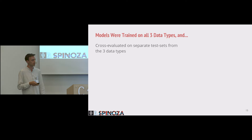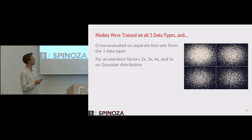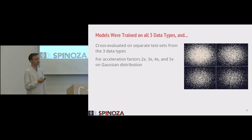During training, we generate subsampling masks using a randomly sampled acceleration factor from a uniform distribution covering all acceleration factors used during testing — factors 2, 3, 4, and 5. To generate these masks, we use a Gaussian distribution so that the central points of k-space are more densely sampled, because the central points determine the general shape of the object, which is more important. The algorithm's job is really to fill in the blanks of the high-resolution points.